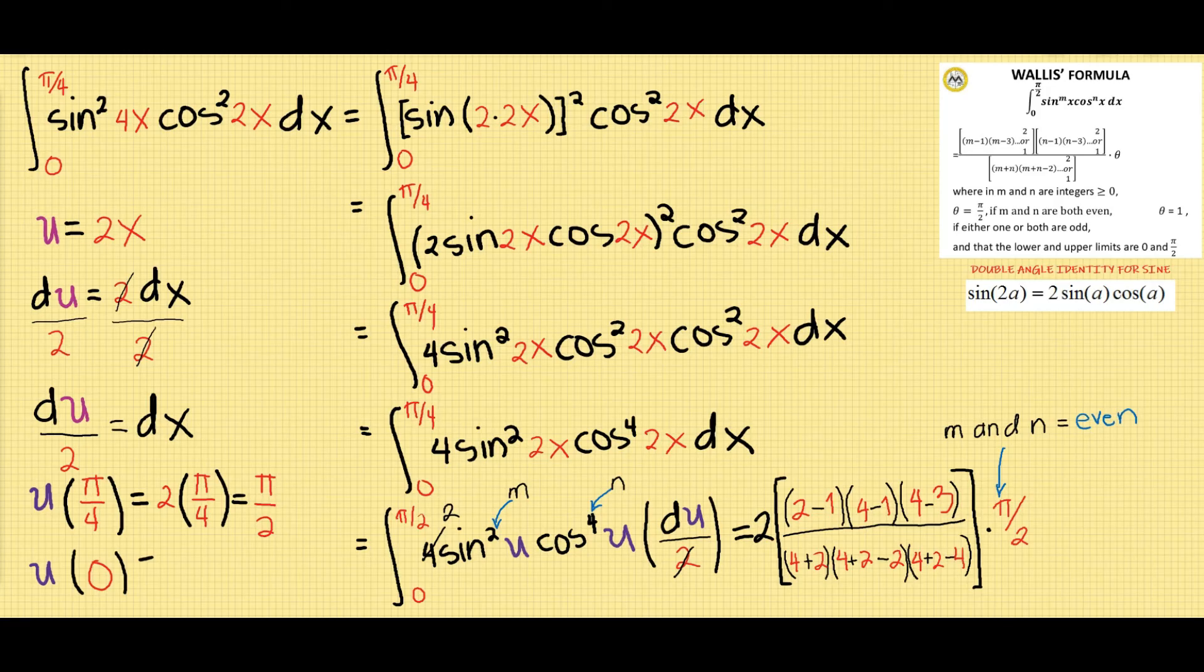We use the Wallis formula to compute for the value of the integral. In this case, since m and n are even, we multiply by pi half. But if m or n or both are odd, we multiply by 1.